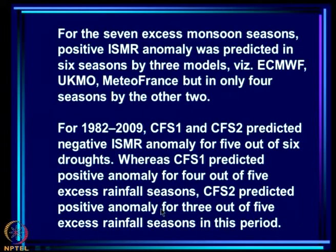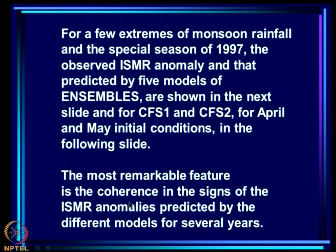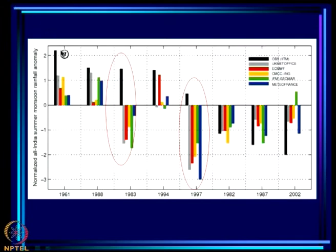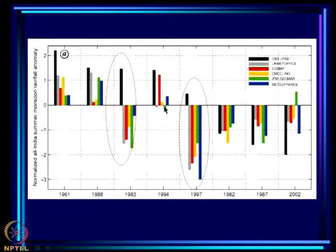For 1982 to 2009, CFS1 and CFS2 predicted negative ISMR anomaly for 5 out of 6 droughts. CFS1 predicted positive anomaly for 4 out of 5 excess rainfall seasons; CFS2 predicted positive anomaly only for 3 out of 5, making CFS2 slightly worse. For the few specific extremes and the special case of 1997: in 1961 all 5 ENSEMBLES models got the sign right; in 1988 also all got it right. But in 1983 all models simulated negative ISMR anomaly whereas it was actually an excess. For 1994, there is improvement over the AGCM experience. For 1997, however, models predicted huge deficits whereas the monsoon was actually normal.